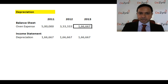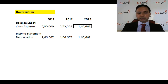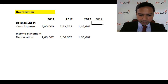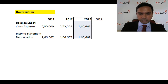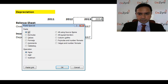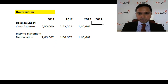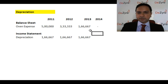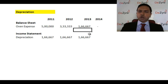You keep depreciating the value of the asset until it roughly reaches zero. By 2014, the value of this asset is zero — it's useless after that point.